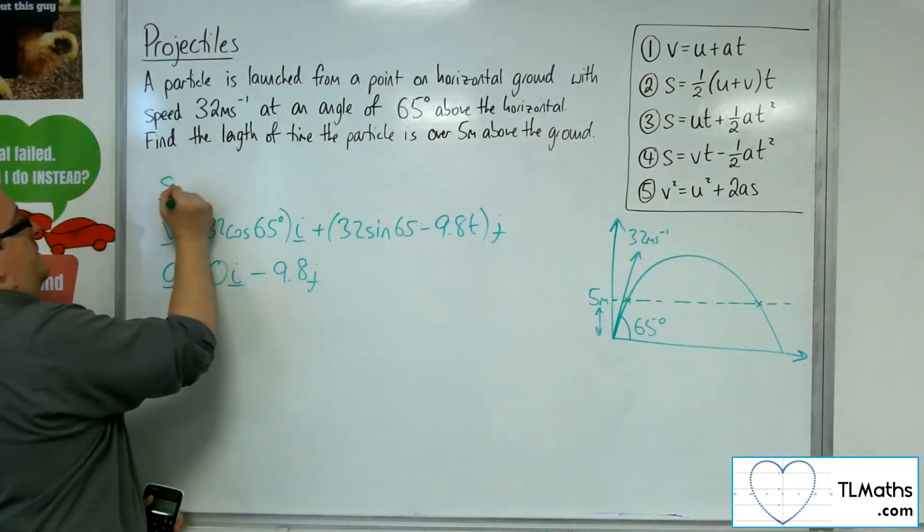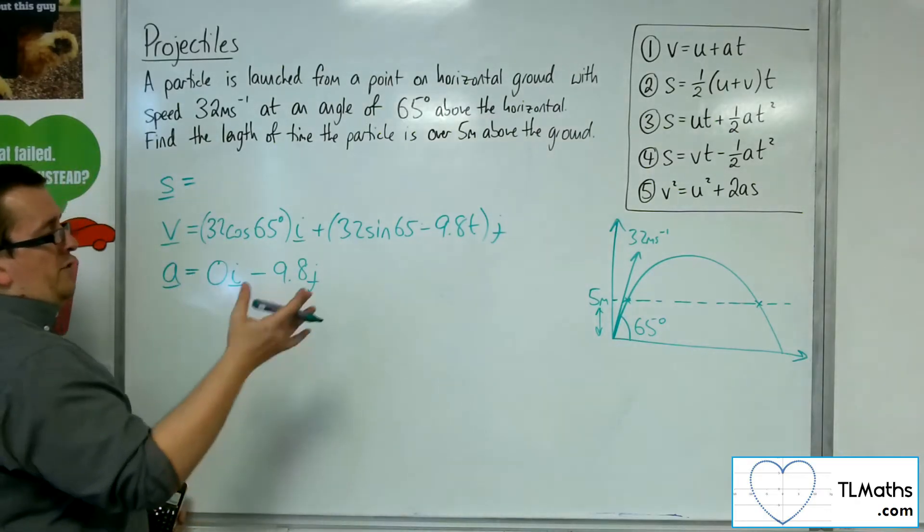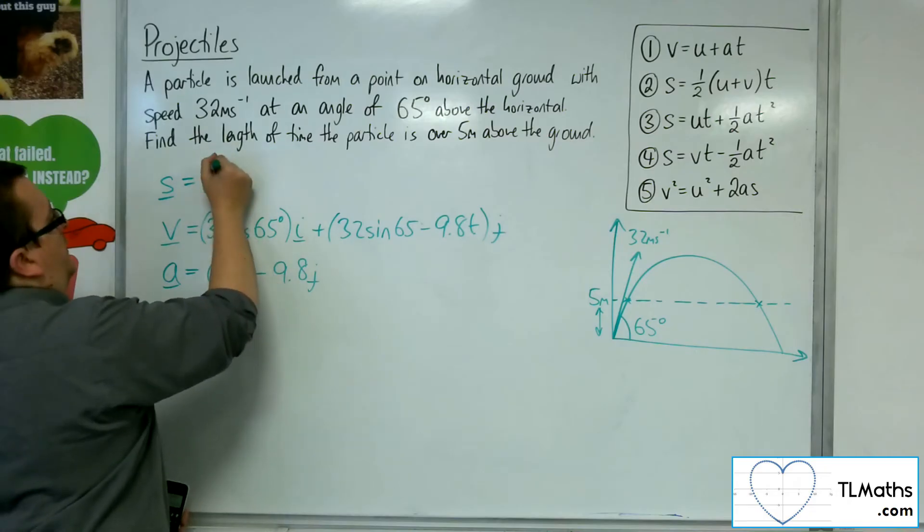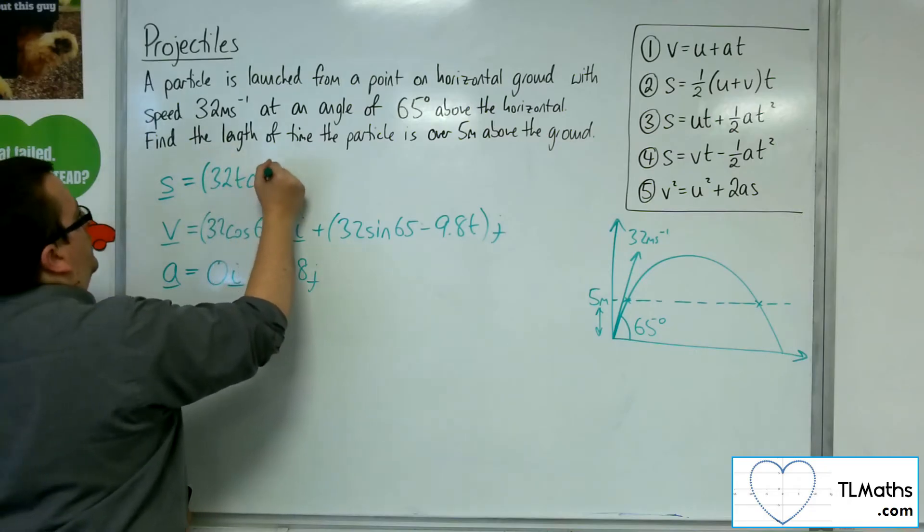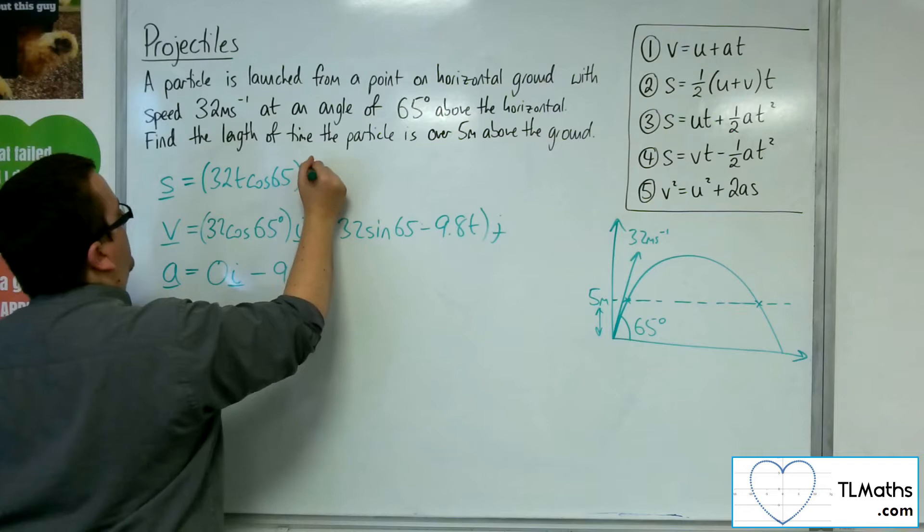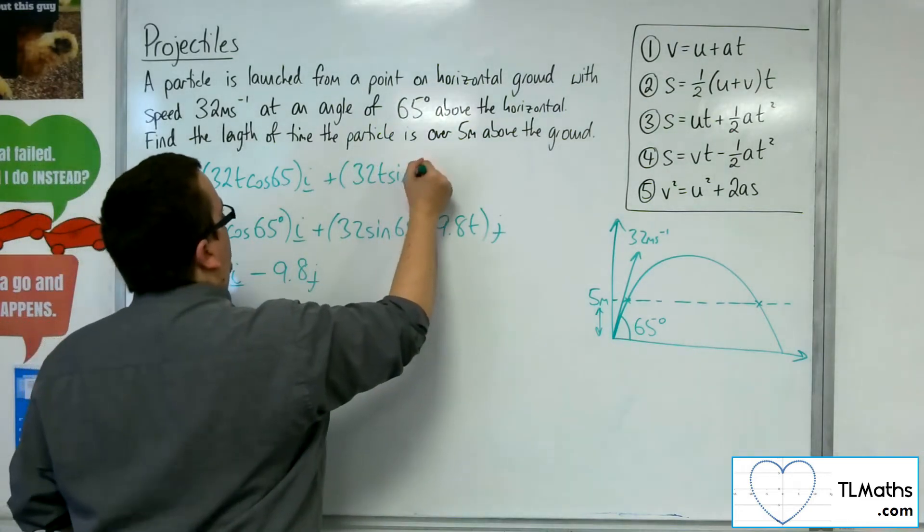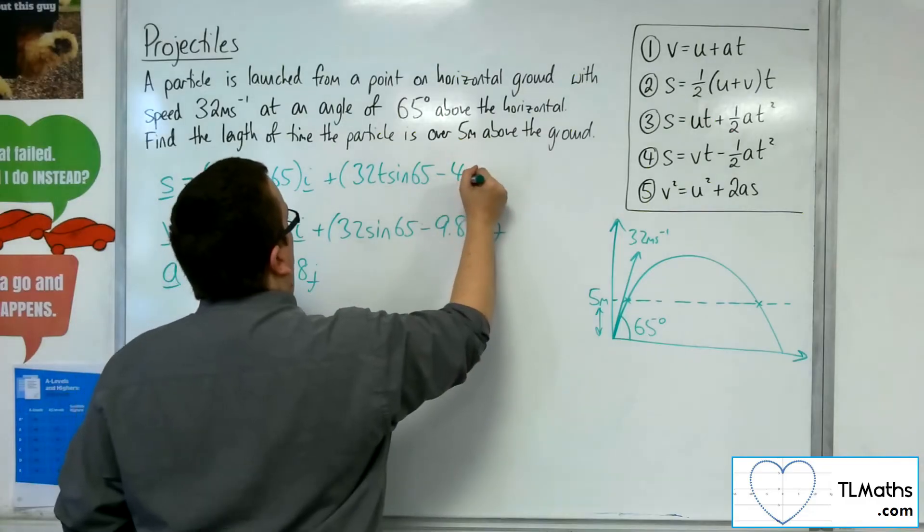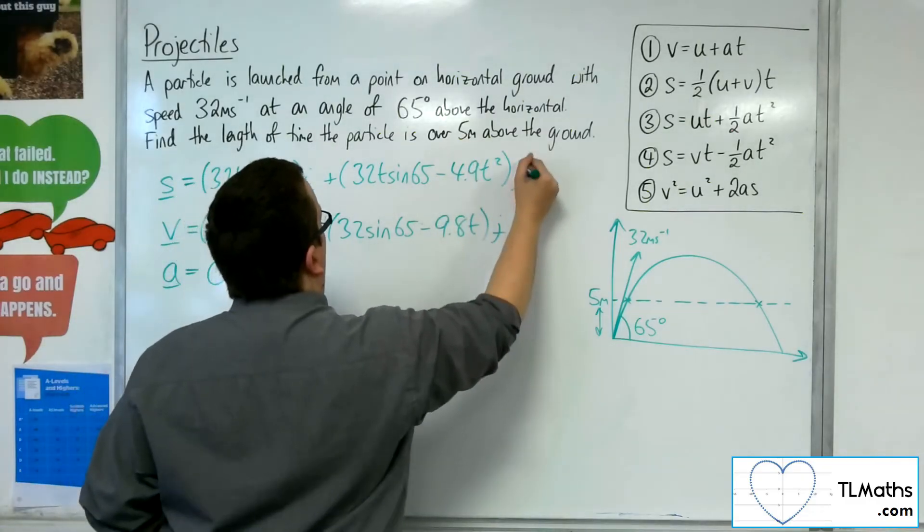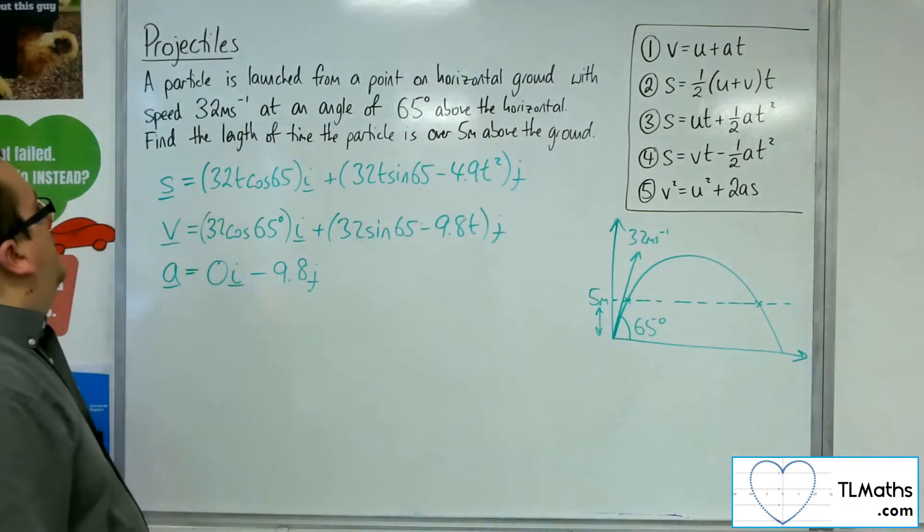And then we've got the S, the displacement. So starting from 0, 0, so I just need to integrate this. So this is 32t cosine 65i plus 32t sine 65, take away 4.9t squared j.